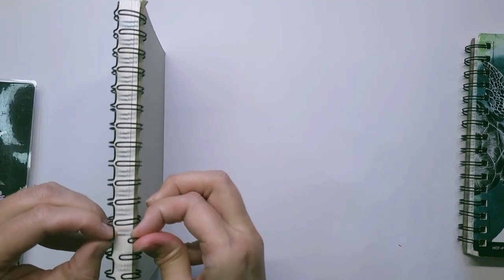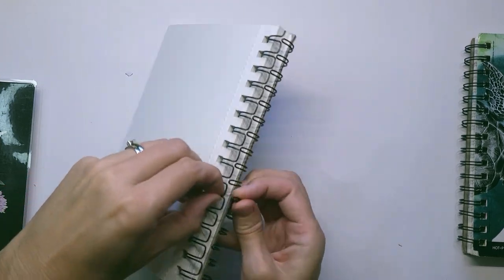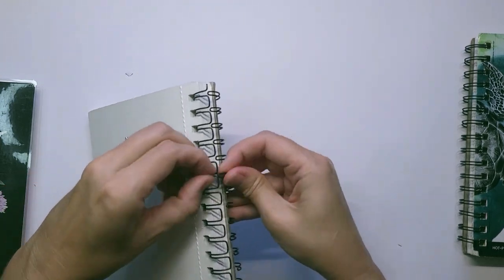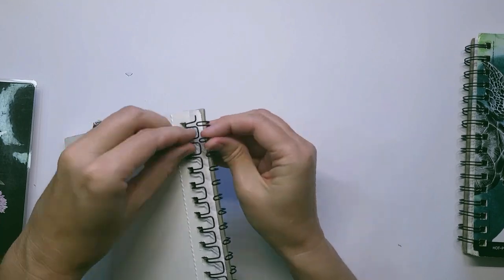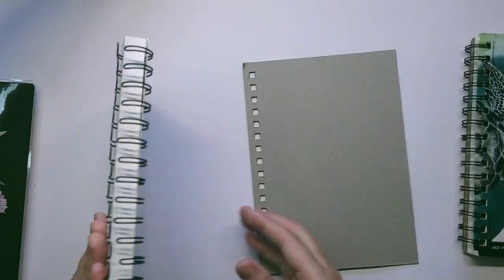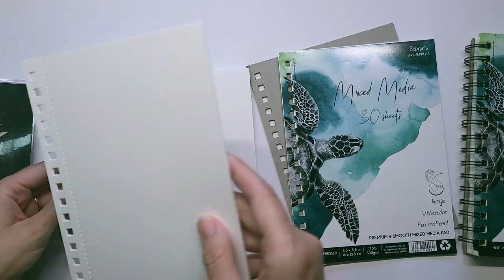You just start by gently prying open the spiral system. Technically it's not a spiral, it's kind of a coil bound, but you want to try to maintain that circular shape.